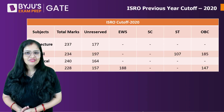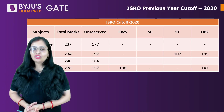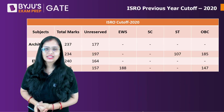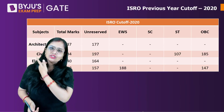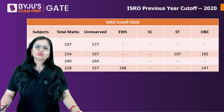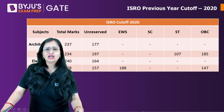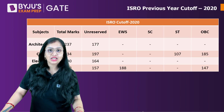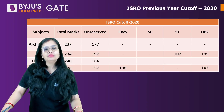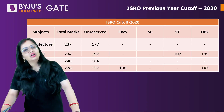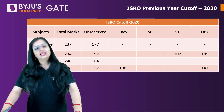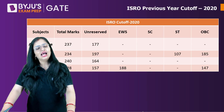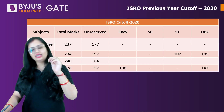Now, if you see the total marks for Architecture listed as 237 or 234 somewhere, you might wonder how that's possible when the paper is of 240 marks. The reason is that after the exam, students raise objections about wrong or ambiguous questions where more than one option is correct. Those questions are not considered for evaluation, which is why the total comes out lower.